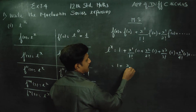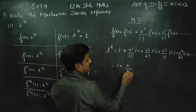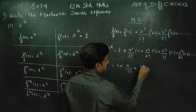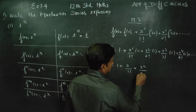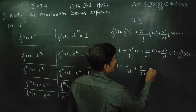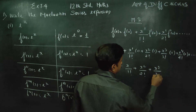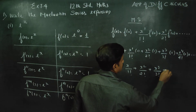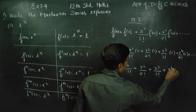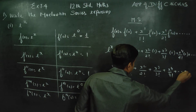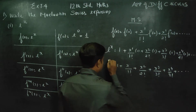Your answer will be: 1 plus x by factorial 1 plus x squared by factorial 2 plus x power 3 by factorial 3 plus x power 4 by factorial 4 plus dot dot dot dot dot.